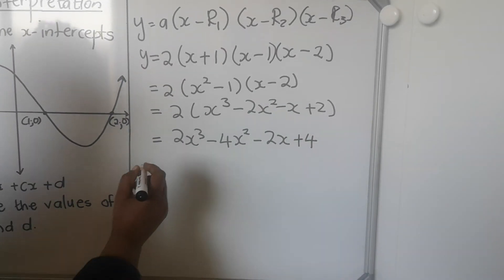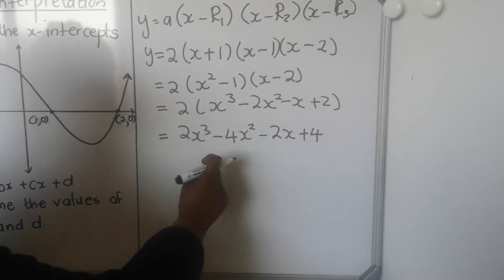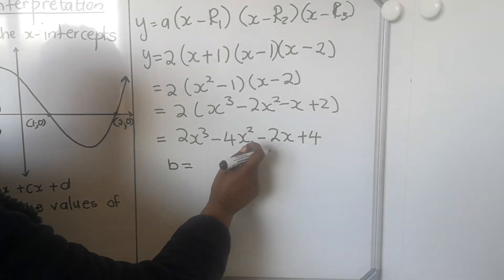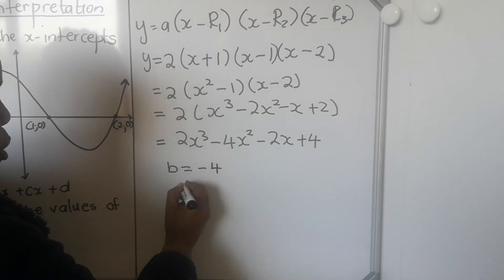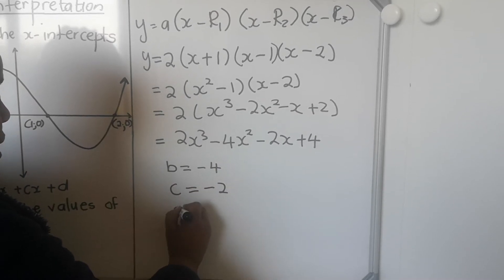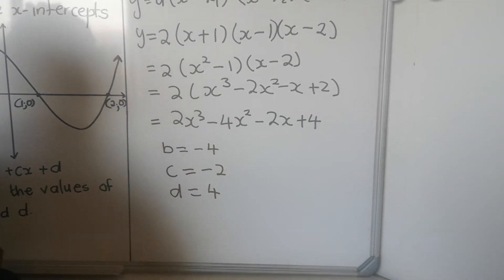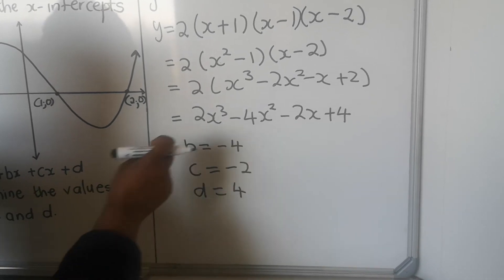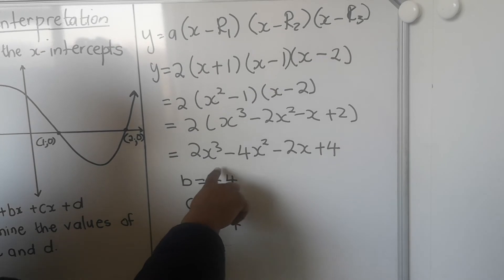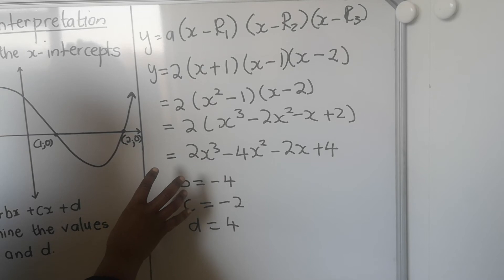Then you answer the question. If they've asked you to name b, c, and d, you can't leave your answer as just the equation. You have to say b is the coefficient of x squared, so b is minus 4. Your c equals minus 2, and your d equals 4. If the question asks you specifically for b and c, you have to state it like that — you get marks for that. Don't expect the marker to figure it out from the equation.